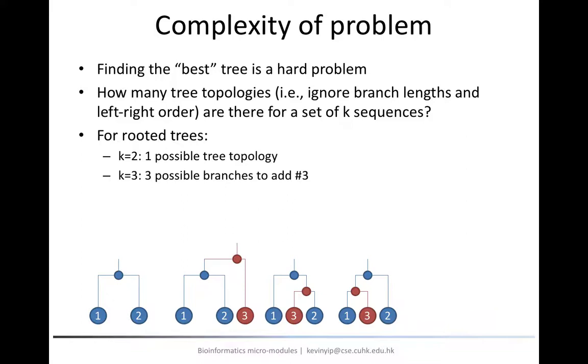By definition, the trees produced in these three ways have different tree topologies, since they cannot be converted to one another simply by swapping the left-right orders of sibling nodes or changing branch lengths.